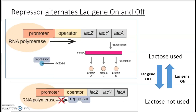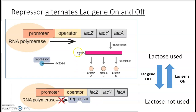Similar to the trp gene, but opposite: rather than tryptophan activating the repressor to bind, lactose inactivates the repressor, causing it to fall off the operator so transcription and translation can occur. The cell uses up the lactose, causing the repressor to bind again, and the cell saves the energy for transcription and translation.